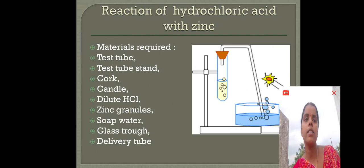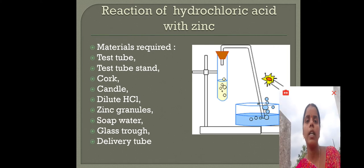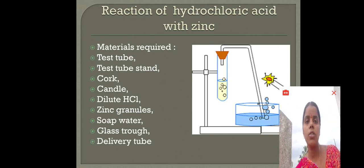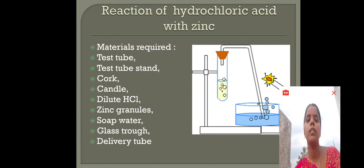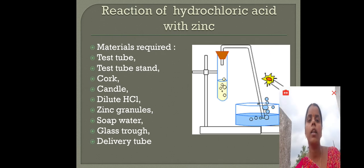To know about the reaction of hydrochloric acid with zinc, we have to do an activity. The required materials for that activity are: test tube, test tube stand, cork, candle, dilute HCl, zinc granules, soap water, glass straw, and delivery tube.